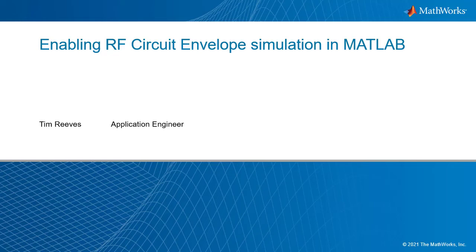Welcome to this presentation where I will be discussing how you can increase the fidelity of your wireless waveform physical layer simulations by including RF impairments modeled by an RF circuit envelope simulation. This level of RF impairment modeling is not included in MathWorks Communications Toolbox nor standards-compliant tools such as 5G Toolbox. This additional modeling facilitates better designs of baseband receiver demodulation algorithms along with adaptive transmitter linearization.